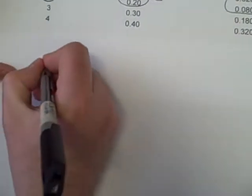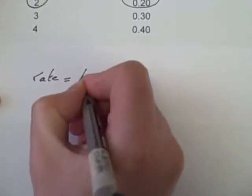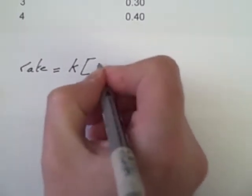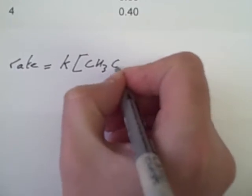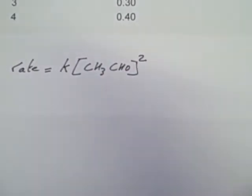So if I was to write out the rate expression, the rate equals K, which is the rate constant, multiplied by the concentration of ethanol. Now because it's second order, I'm going to square it.